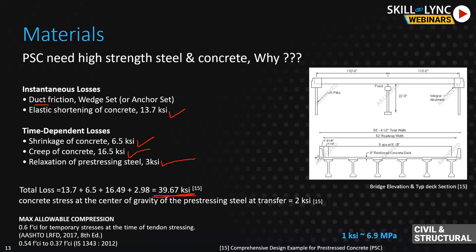What would happen if you used regular mild reinforcement at 60 ksi? Even if you pull the strand to 60 ksi and there is a loss of 40 ksi, there's barely any effective stress left. This is a very simple bridge - when spans are longer, or multi-span, or post-tensioned with duct friction and anchor set, these losses increase further. So we definitely need something where we can apply a higher effective prestress force so that even after these losses we still have sufficient effective prestress.